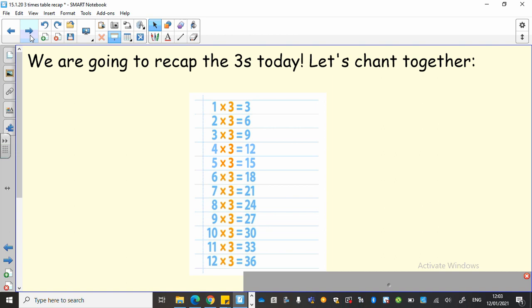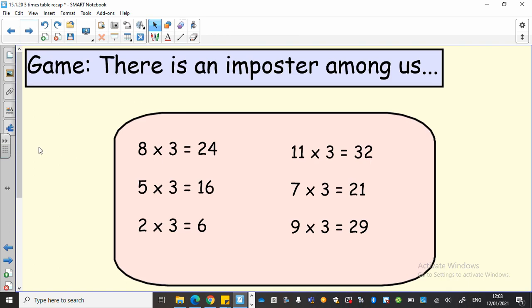Now for our quick game, we've played this in class before and you quite enjoyed it. There is an imposter among us! So I've got six calculations in front of me - they are all something times three because we're doing the three times table. Some of them are right, some of them are wrong. You need to pause this video until you figure out the ones that are wrong. I'm not going to tell you how many there are. Then you're going to press play and we'll find out the answers together. Go!